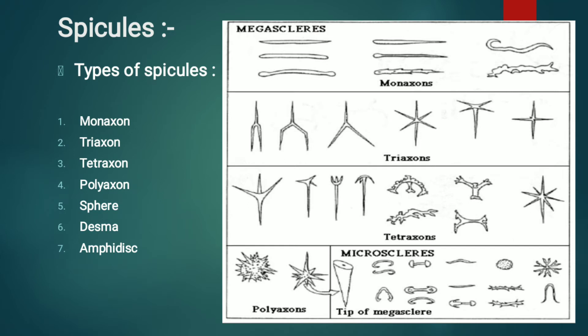The spicules and sponge fibers are both structures which form the supporting skeleton in sponges. The spicules are made up of scleroblasts in the mesenchyme and may be either calcareous or siliceous in nature. Spicules are of two types: megascleres, or supporting spicules, and microscleres, which are small and non-supporting spicules.